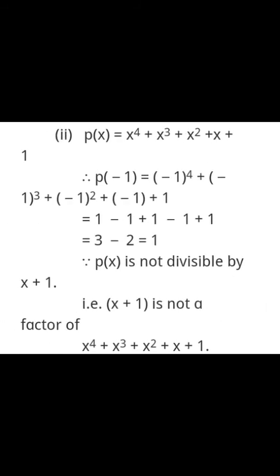Similarly you can check other parts. One thing you should know: if a minus sign has an even power, it becomes positive; if it has an odd power, it remains negative. In this question the remainder is not 0 but 1, so (x+1) is not a factor of x⁴ + x³ + x² + x + 1.